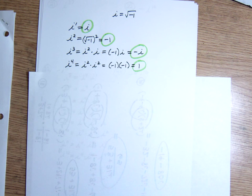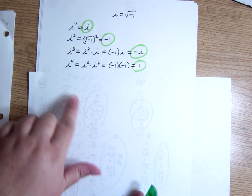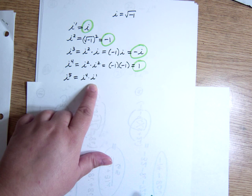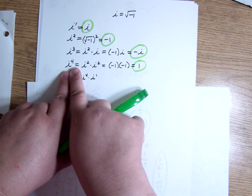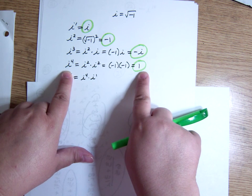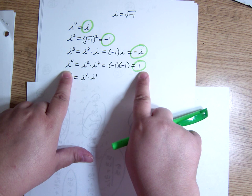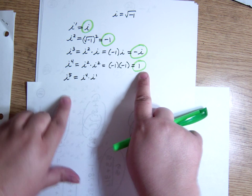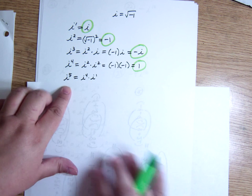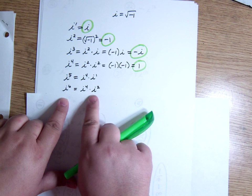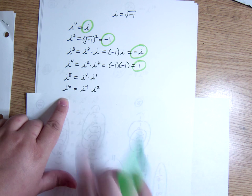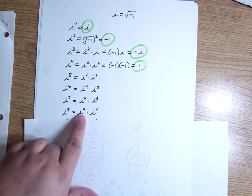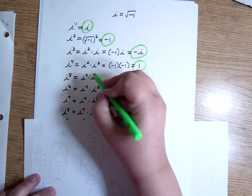And then it's going to repeat because i to the fifth is just i to the fourth times i. Every time you have i to the fourth, it equals 1. You don't have to multiply by 1. If I have 1 times something, it's just the something. So this is 1 times i. i to the sixth is i to the fourth times i squared. So it basically repeats.